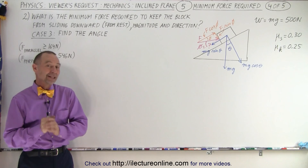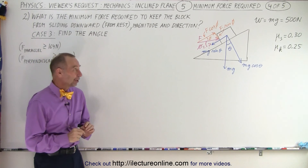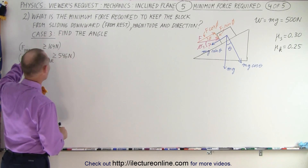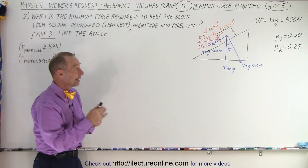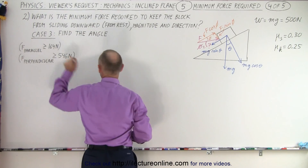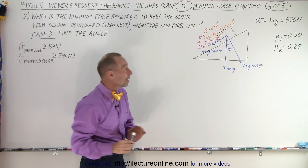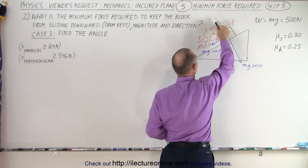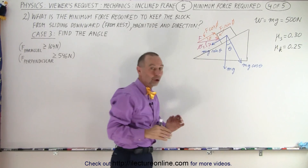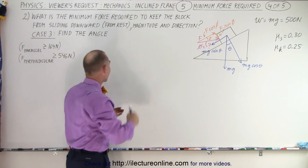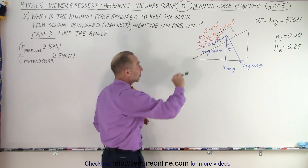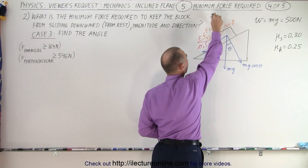Welcome to Electronline. On the previous two videos, we found the minimum force required to keep the block from sliding down. If the force was parallel to the incline, that ended up being 164 Newtons. Then we found the minimum force required if the force was perpendicular to the incline, adding additional frictional force to prevent the block from sliding down, and that took 546 Newtons. So it took less force pushing this way compared to this way.